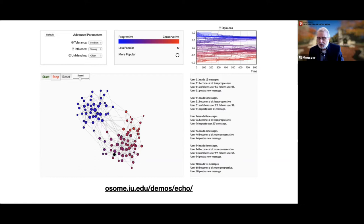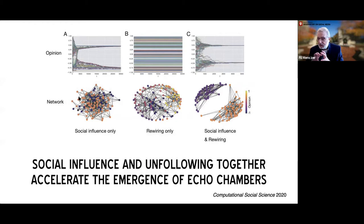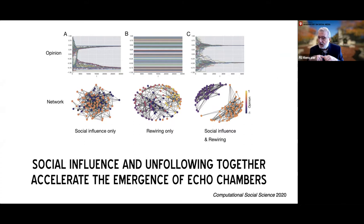The simulation is available to play with. You can set parameters: tolerance means how close an opinion must be to yours to influence you or to trigger unfriending; influence regulates how quickly you adapt your opinion; unfriending is the likelihood you unfollow someone. As long as influence and unfriending are non-zero, you always end up with complete homogeneity and complete segregation. When you have both ingredients, no matter how small those probabilities, this transition is orders of magnitude faster.